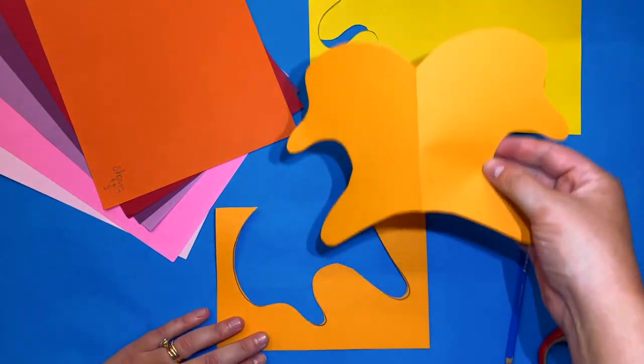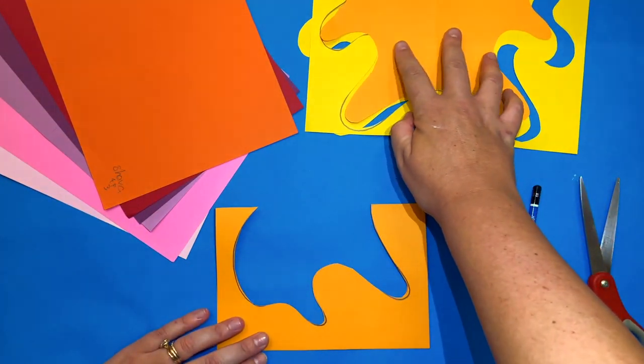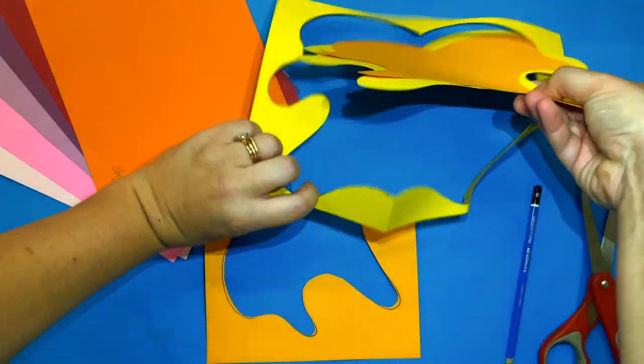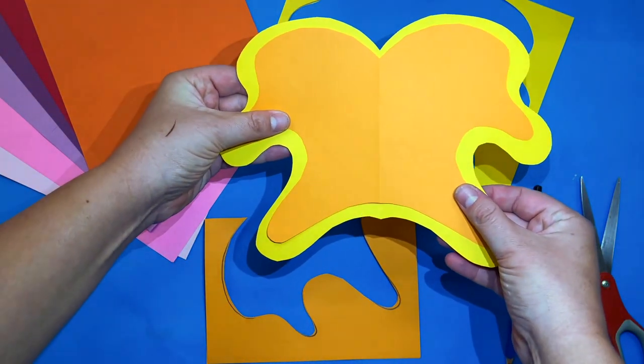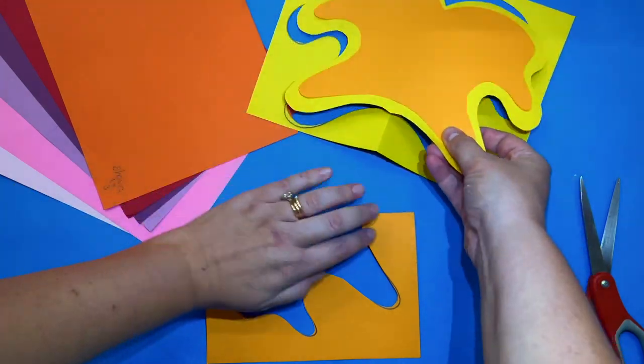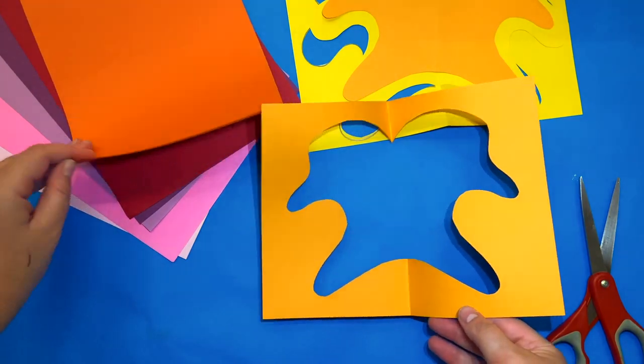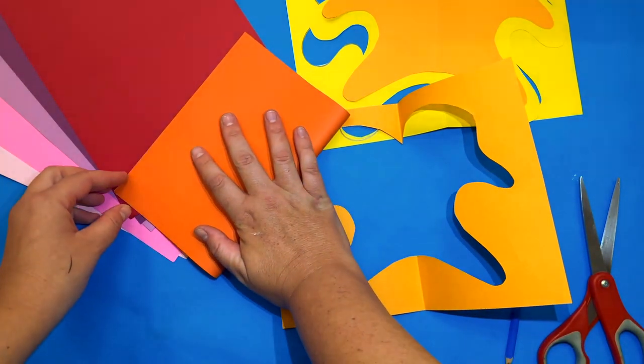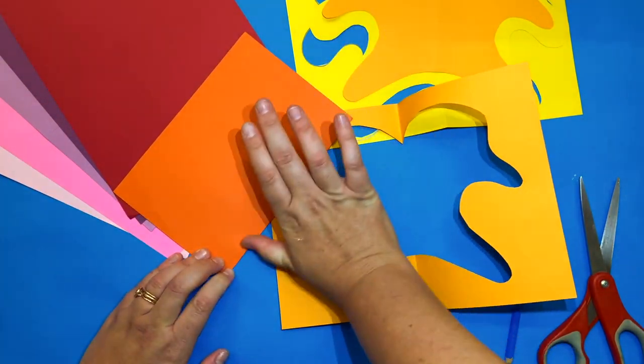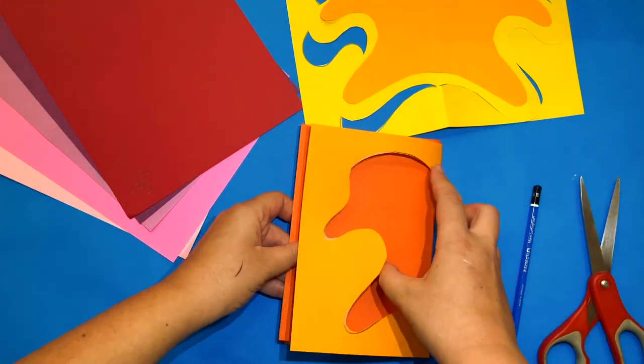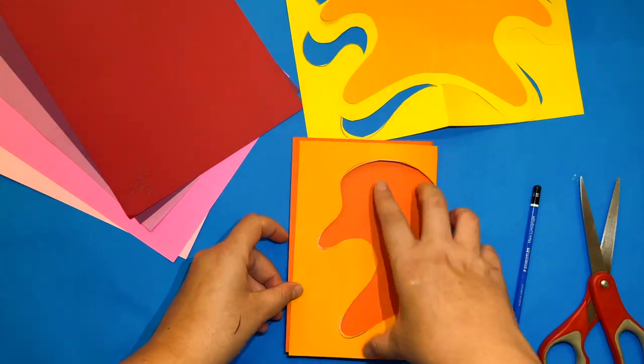My positive shape I can set on top of my other positive shape and you'll notice that they are starting to get smaller. Again we need the negative shape to go ahead and work on our third paper. Fold that paper in half, put it inside like a book, trace and cut.